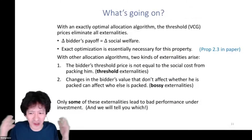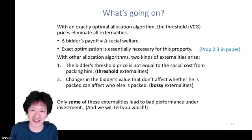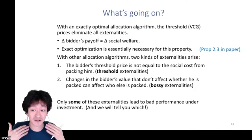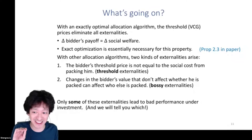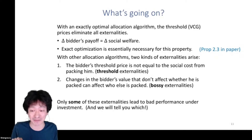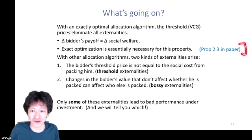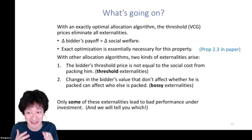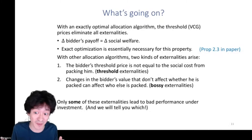Why didn't the VCG analysis work here? The key intuition is this: if you have an exactly optimal allocation algorithm, the threshold prices eliminate all the externalities — the change in a bidder's payoff from changing her value equals the change in social welfare. This property is pretty fragile. Exact optimization is essentially necessary for this property. If you don't have an exactly optimizing algorithm, this nice externality-pricing property isn't going to hold.